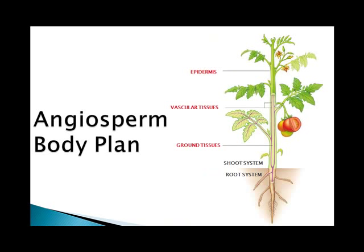Plants also consist of three basic tissue types: the ground tissue, vascular tissue, and dermal tissue. The ground tissue system makes up the bulk of the plant's body. The vascular tissue system contains two kinds of conductive tissues that distribute water and solutes throughout the plant's body. And the dermal tissue system covers and protects the plant's surfaces.